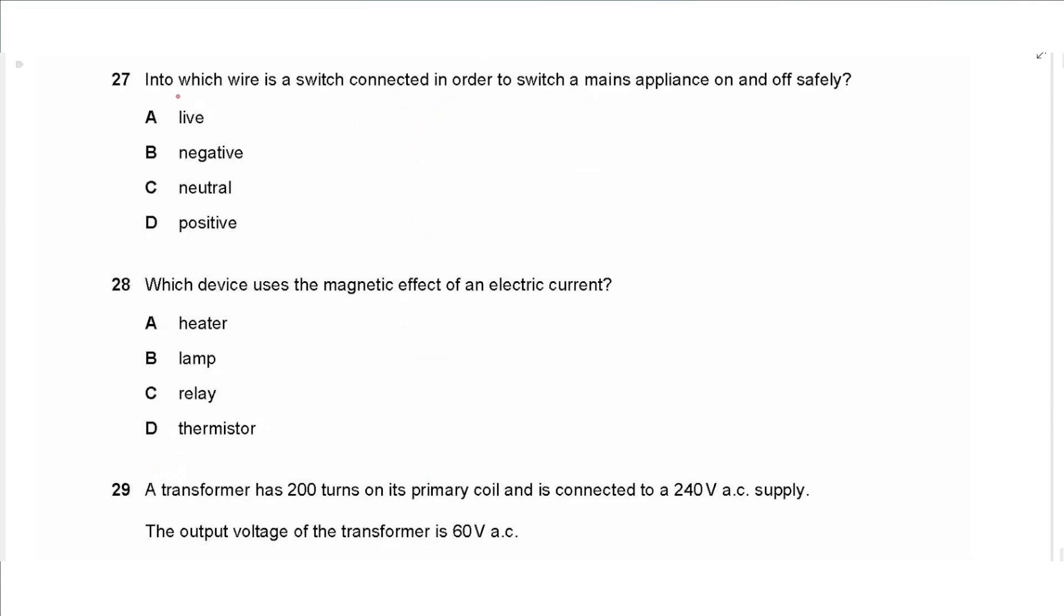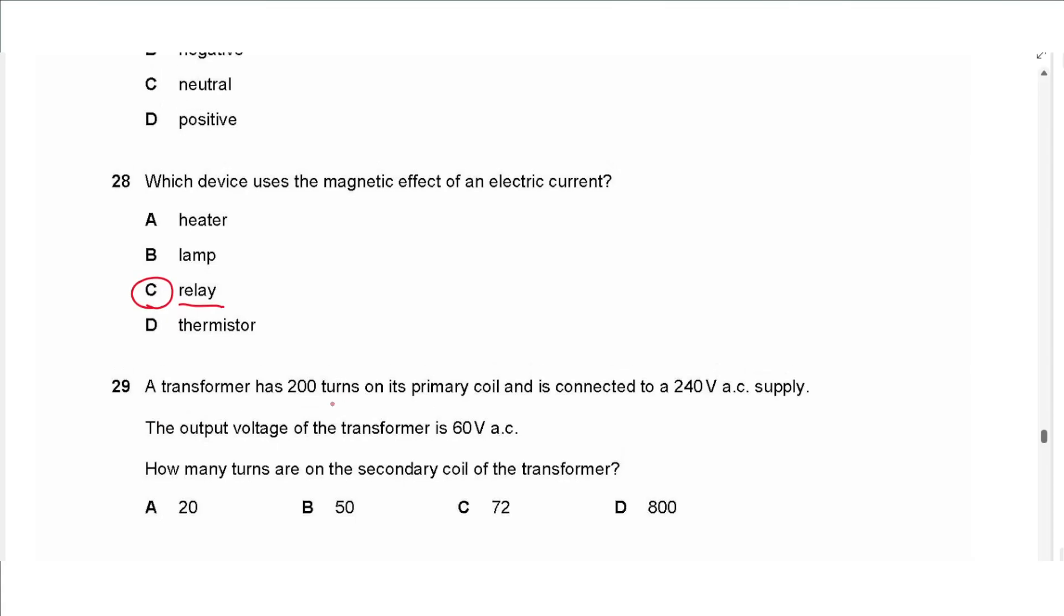Question 27 says into which wire is a switch connected in order to switch a mains appliance on and off safely, that's the live wire, so we choose A. Question 28 says which device uses the magnetic effect of an electric current. Is it a heater, a lamp, a relay, or a thermistor? That's a relay because it's a magnetic switch, so we choose C.